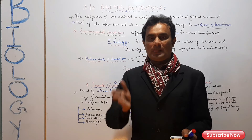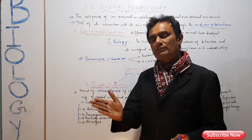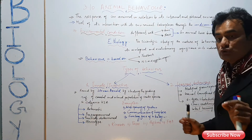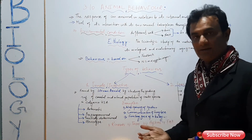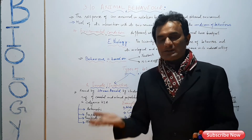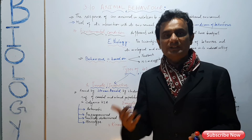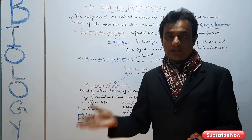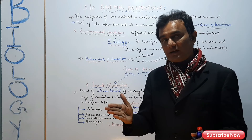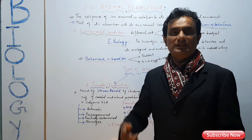Innate behavior is transferred from parents through genes. In contrast, learned behavior needs to be learned. For example, if you are a wrestler, your baby is not born a wrestler — you have to practice. If you are a teacher, your baby is not born a teacher. If you are a bodybuilder, you join the gym and learn through experience.